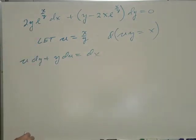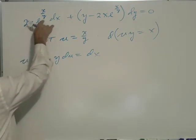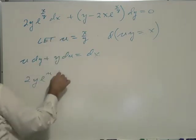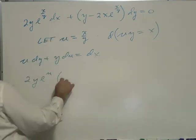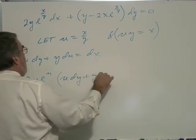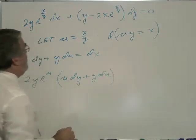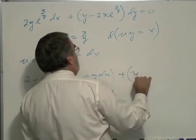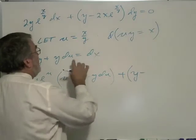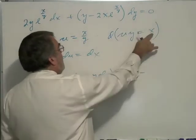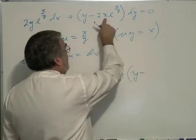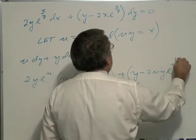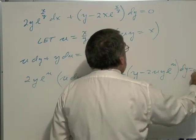So let's go ahead and replace everything. Over here I've got 2y e to the u, 2y e to the u, and dx is this mess right here, u dy plus y du, parentheses. Here I've got y minus, in parentheses, y minus 2x, and we're replacing the x's, so I'm going to rewrite u times y for x. So minus 2uy e to the u dy equals to 0.